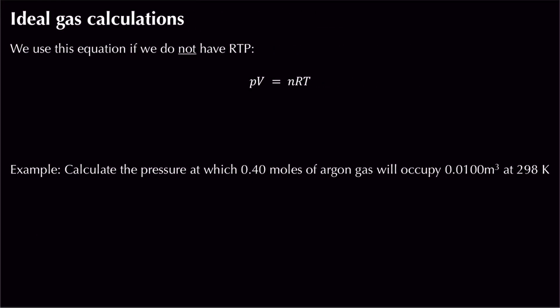Why do we need to do all of this? We need to be able to calculate pressure, volume, number of moles, the gas constant, or temperature using the ideal gas equation. We use this when we don't have room temperature and pressure, or the molar gas volume.